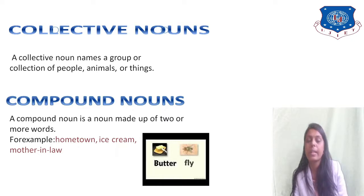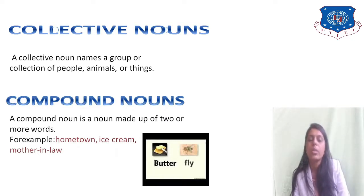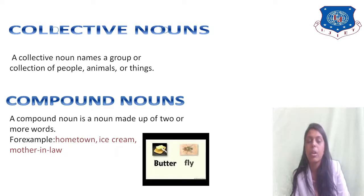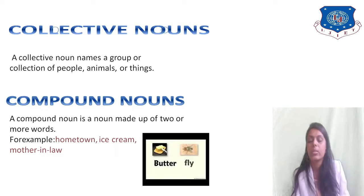A compound noun is a noun made up of two or more words. For example, hometown, ice cream, and mother-in-law. There are two or more words joined together, which is why it is called a compound noun.